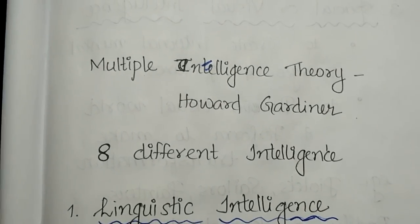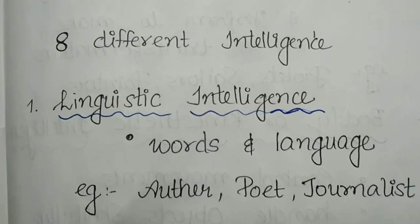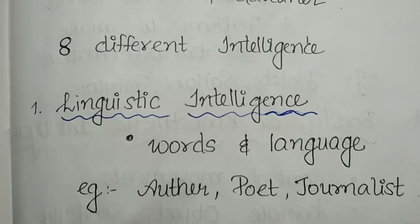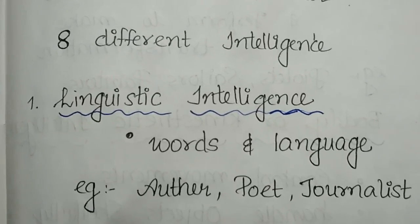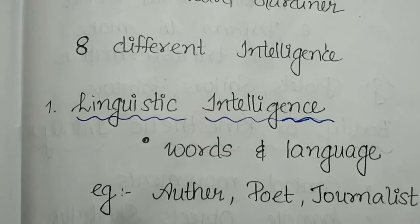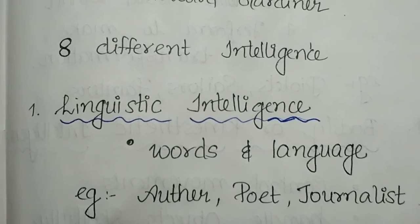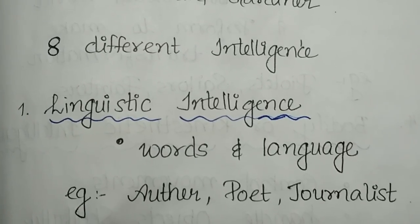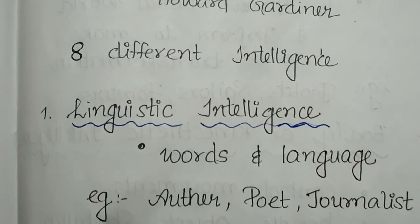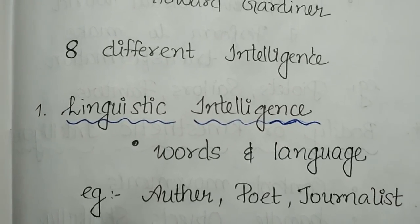According to Howard Gardner's theory, the first type is linguistic intelligence. The word 'linguistic' refers to language. For example, authors, poets, and journalists have very strong linguistic intelligence — a strong writing and language capacity falls into this category.